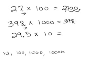So three, nine, eight, move one, two, three spaces to the right, fill those in with zeros. The answer: three hundred and ninety-eight thousand.